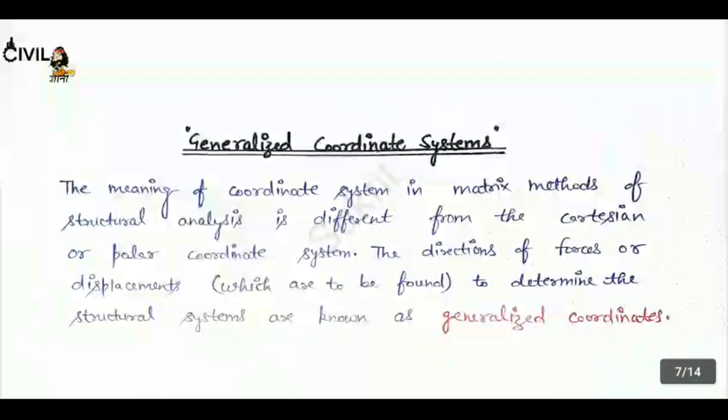Now, generalized coordinate systems. The meaning of coordinate system in matrix methods of structural analysis is different from the Cartesian or polar coordinate system. The directions of force or displacement used to determine the structural system are known as generalized coordinates.